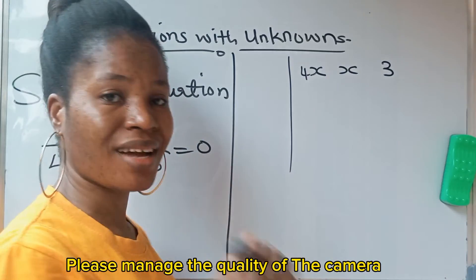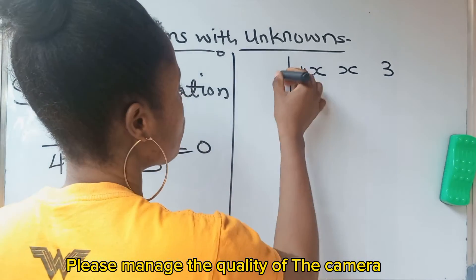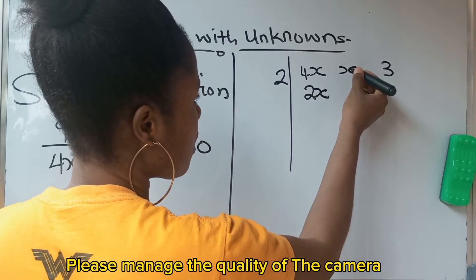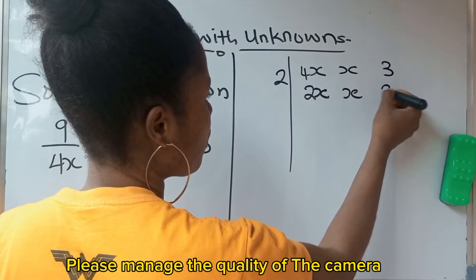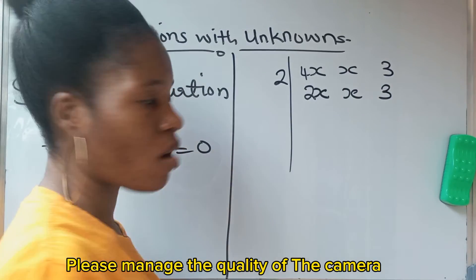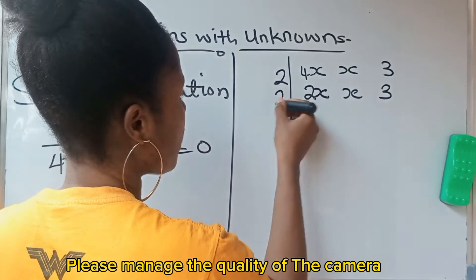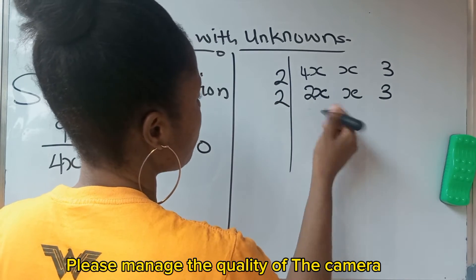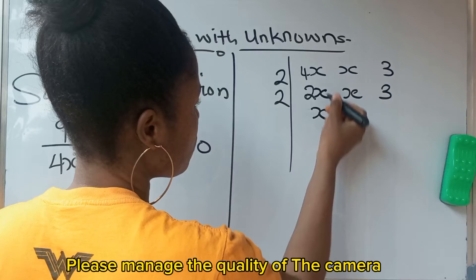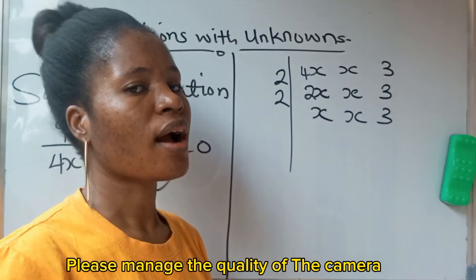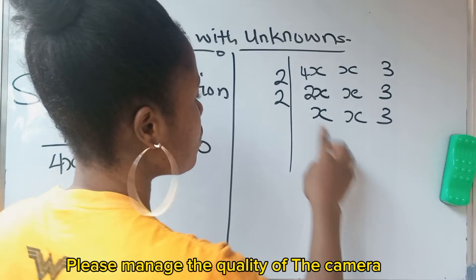2, right? The smallest number, 2. 2 divides 4x, you are going to have 2x. 2 cannot divide x, it cannot divide 3, so you bring those ones down. At this point, 2 can go again. 2 will divide here to give you x only because this will be cancelled. You will still bring down your x and 3 because 2 cannot divide them without remainder.